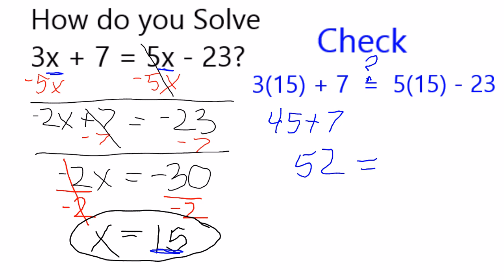Let's see if we get the same thing on the other side. 5 times 15 is 75. And 75 minus 23. Yup, that is going to equal 52 as well. So, it checks out.